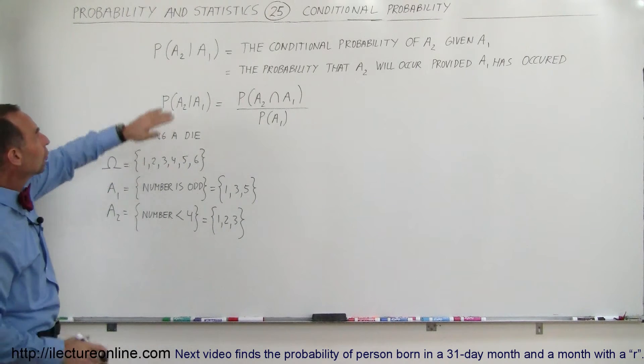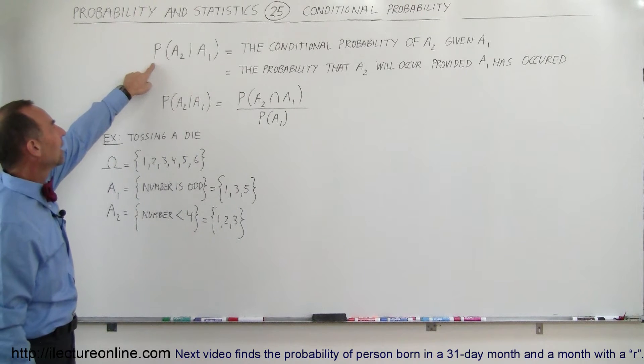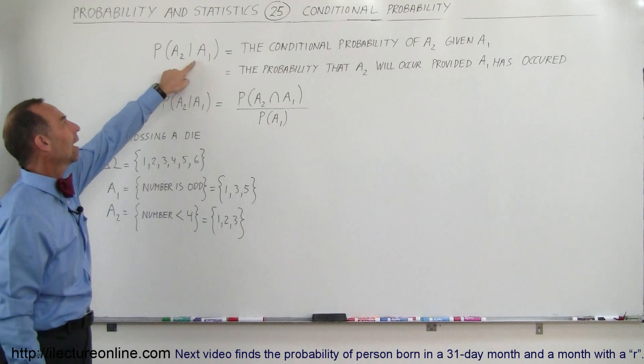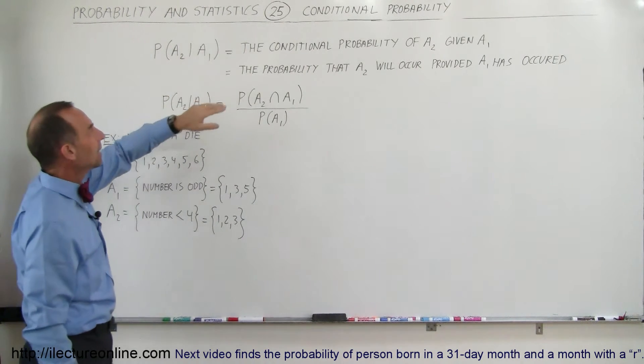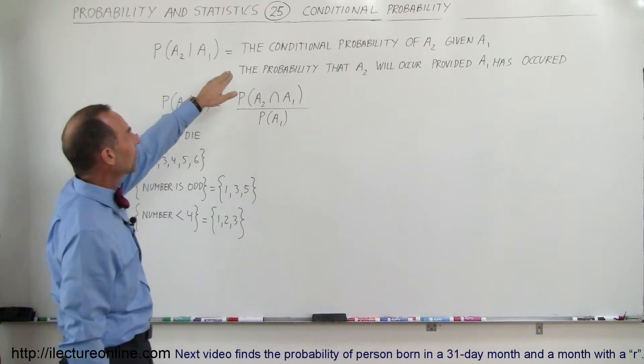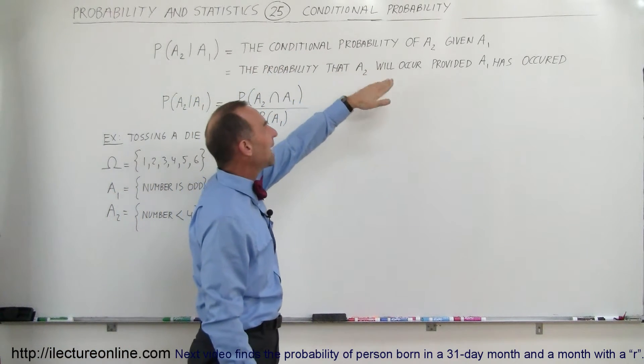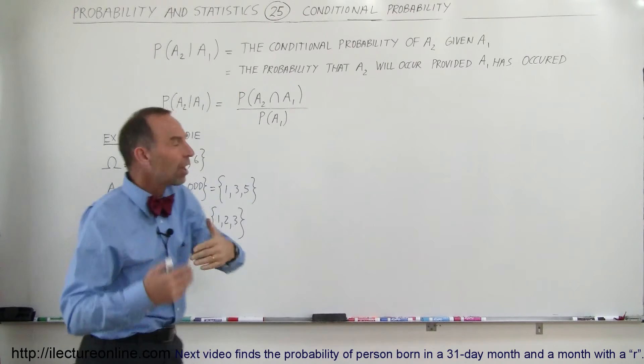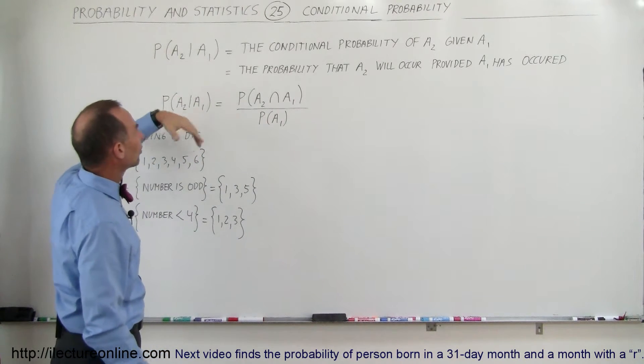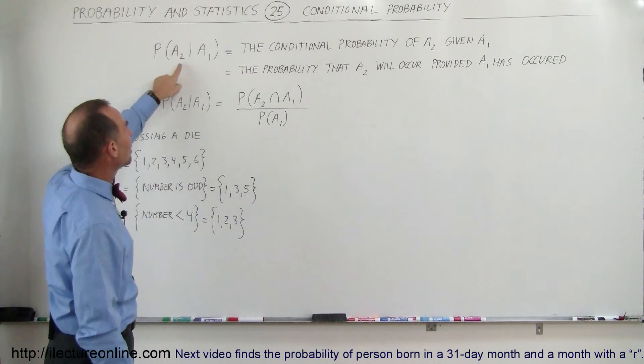The way we write the nomenclature is the probability of event 2 depending on event 1. And here the wording that they use is the conditional probability of A2 given A1. So that's how we actually say this, the conditional probability of A2 given A1.